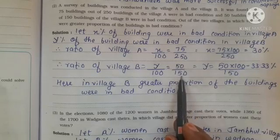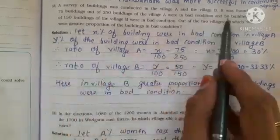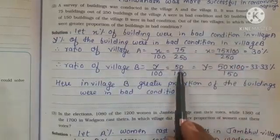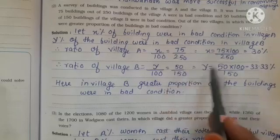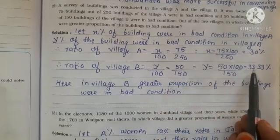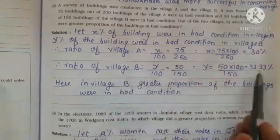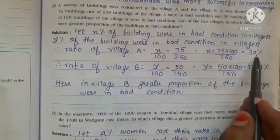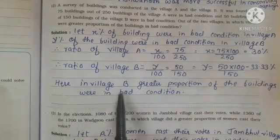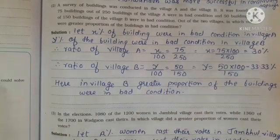The ratio for Village B: y/100 = 50/150, since out of 150 buildings, 50 were in bad condition. So y = 50 × 100/150, which gives 33.33%. Village B has a higher percentage than Village A. Therefore, in Village B, a greater proportion of the buildings were in bad condition.